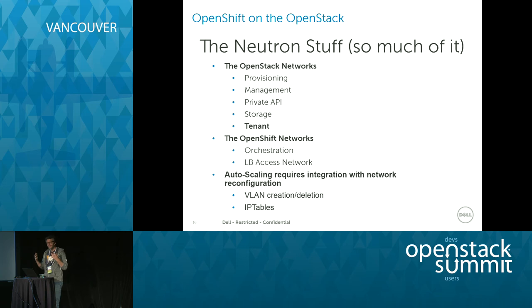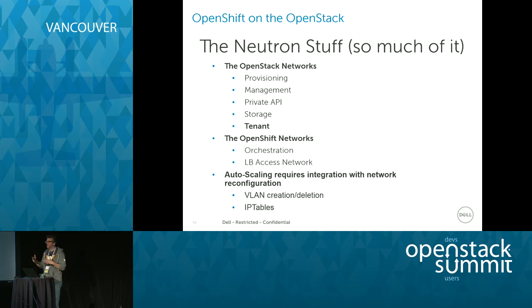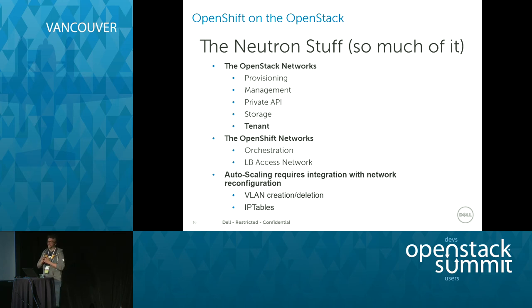OpenShift has a fairly simple network — just two basic networks: an orchestration network for Kubernetes and a load balancing access network where new client requests that hit the load balancer are split off into a private network where all requests are served. The autoscaling requirements force us to create and remove VLANs and ensure they're being created appropriately so customers' traffic doesn't ride over each other. I see this only as possible with VLANs and more work in SELinux and IP tables, and I'm working on that now — I'd love for you to join me on the OpenShift mailing list.